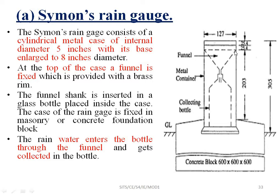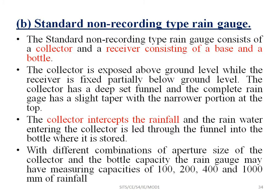The Simon's rain gauge is installed with its container fixed at 127 centimeters above ground. At the top of the case, a funnel is fixed with a brass ring. The funnel shank is inserted into a glass bottle inside the case. Rainwater enters the bottle through the funnel and gets collected; the collected water is then measured manually using a measuring scale in centimeters.